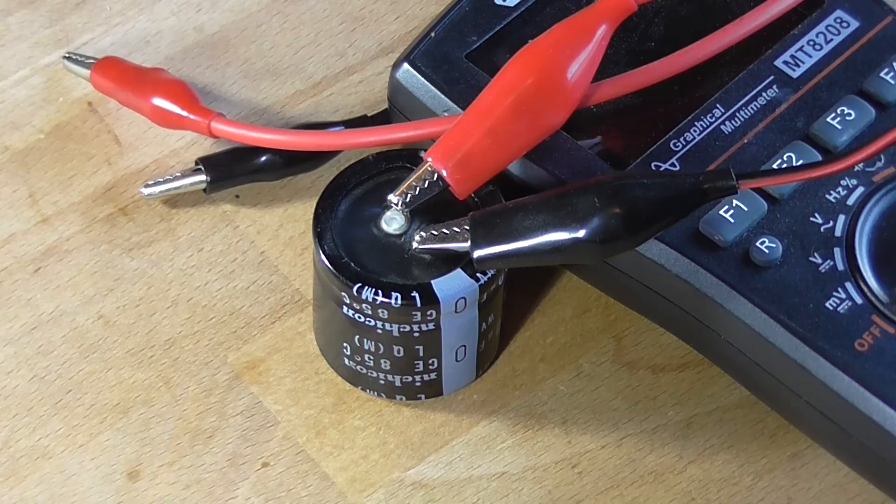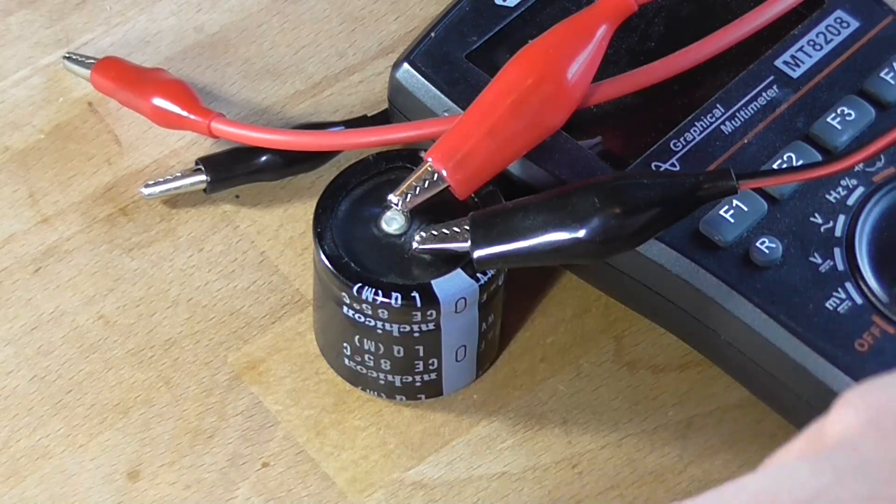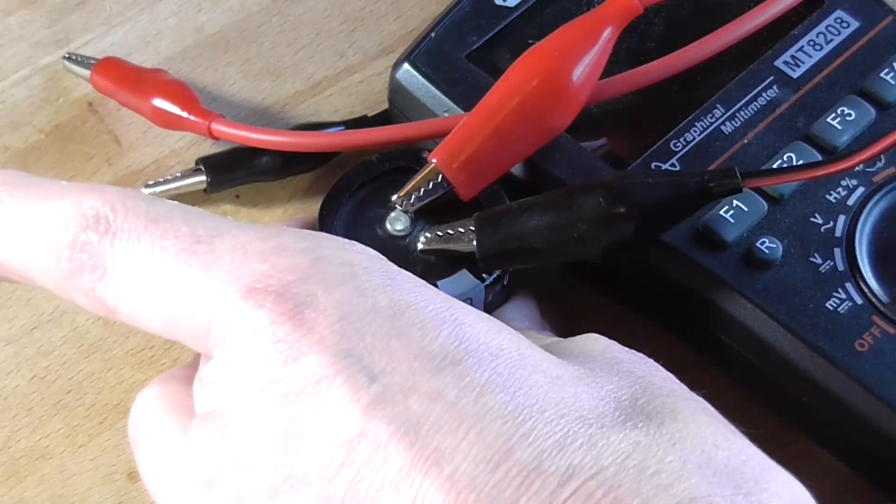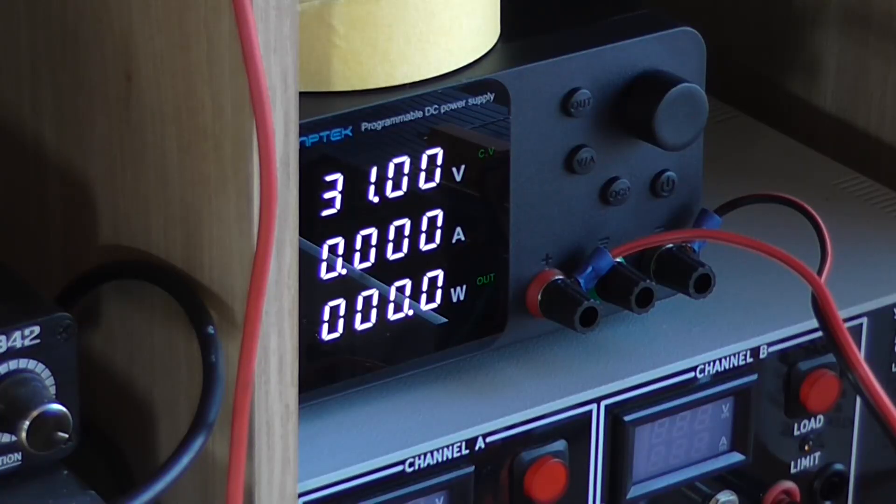Okay, so that capacitor has been cooking for about five minutes now. Now there's no unusual smells, there's no smoke, there's no heat, and most of all there is no unusual current draw. The current draw is still zero. If we were still seeing 10 milliamps and it was struggling to maintain the 31 volts, that's a good indication that there's a problem with that capacitor.